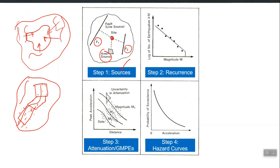If a fault's faulting mechanism is well established and we have slip rate estimates, in those cases we may explicitly model those faults as line sources. For other earthquakes that cannot be associated with any particular fault, we use area sources to model them. The summary is that each past earthquake is somehow accounted for in future prediction — it is either part of an area source or part of a line source. Each earthquake is somehow associated with a source.